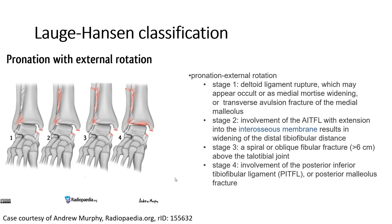Pronation with external rotation is divided into four stages. Stage 1: deltoid ligament disruption, which may appear occult, or medial joint widening, or a transverse avulsion fracture of the medial malleolus. Stage 2: involvement of the anterior inferior tibio-fibular ligament with extension into the interosseous membrane, resulting in widening of the distal tibio-fibular distance. Stage 3: spiral or oblique fibular fracture more than 6 cm above the tibiotalar joint. Stage 4: avulsion of the posterior inferior tibio-fibular ligament or posterior malleolus fracture.